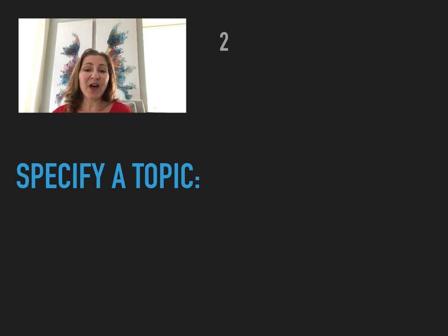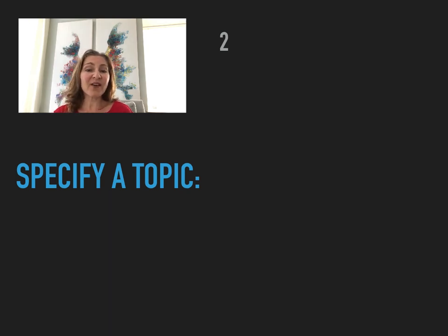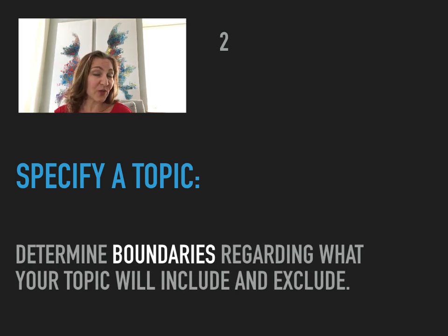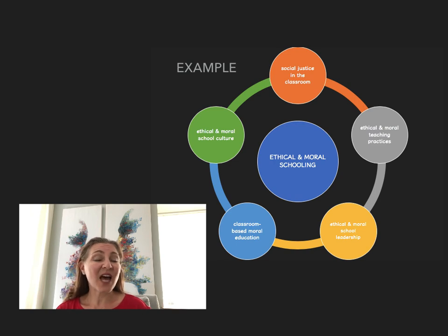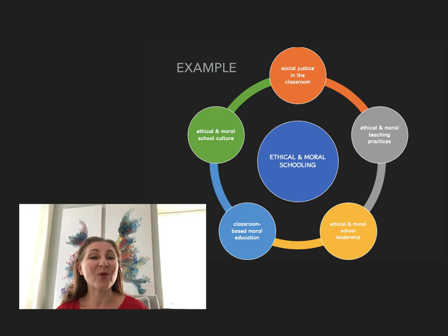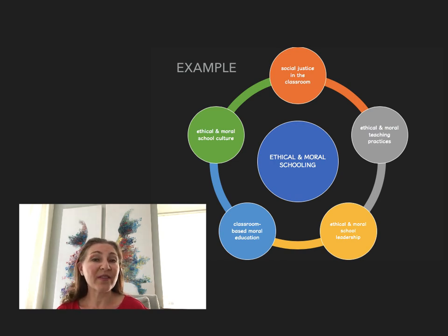The second step is to specify a topic of interest within the broader subject area you've been reading about. Most subjects entail several topics and they can be quite intertwined, so in order to focus in and define your topic, you determine boundaries regarding what your topic will include and what it will exclude. Here's an example from my world: the subject area is ethical and moral schooling — it's very large — but there are several topics in this area, including social justice in the classroom, ethical and moral teaching practices, ethical and moral school leadership, classroom-based moral education, and ethical and moral school culture.